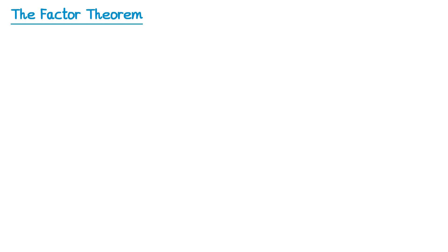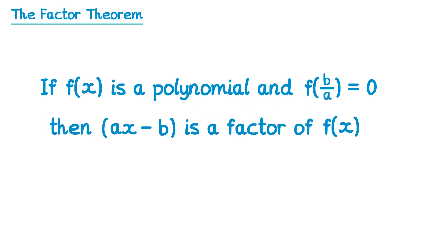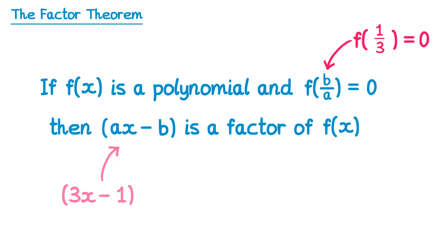This means we need to slightly modify our factor theorem. If f of x is a polynomial and f of b over a equals 0, then ax minus b is a factor of f of x. For example, if f of one third equals 0, then b is 1 and a is 3, so 3x minus 1 is a factor.